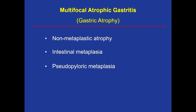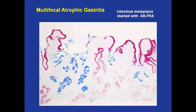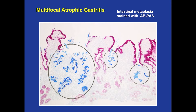Going back to multifocal atrophic gastritis, which is the term I prefer, these are variants of the process: non-metaplastic atrophy, which is plain loss of glands, or glands replaced mainly by intestinal and pseudopyloric metaplasia. I like the multifocal atrophic gastritis term because it reflects the multifocal nature of the process. With this stain — Alcian blue PAS — the pink color is normal gastric mucosa and the blue is intestinal metaplasia. The process starts as single glands, then several glands become confluent and the lesions get bigger.